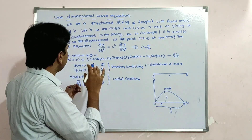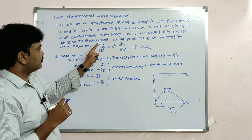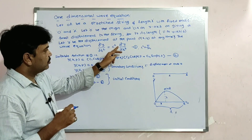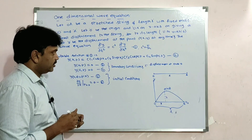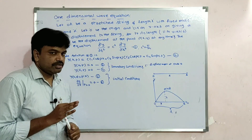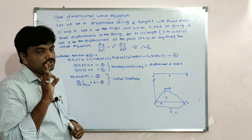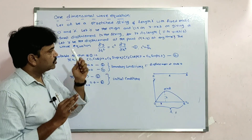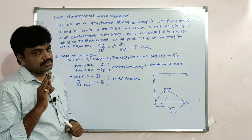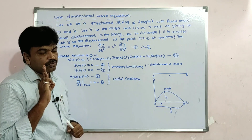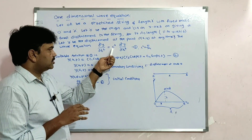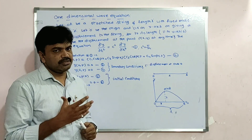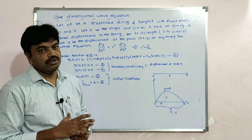The wave equation is: ∂²y/∂t² = c² · ∂²y/∂x². Here c is a material constant defined as c² = T/m, where T is the tension and m is the mass.